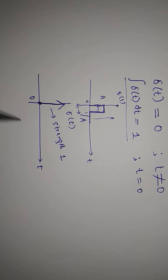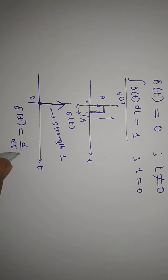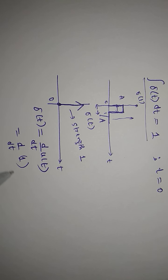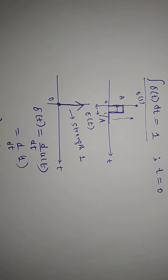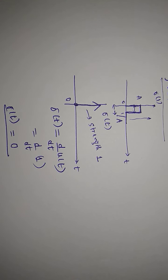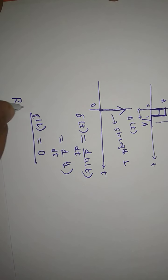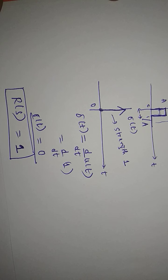One more important point: δ(t) can be defined as d/dt of u(t). Taking the derivative of u(t), which equals one, with respect to time gives zero, confirming δ(t) = 0 for t ≠ 0. The Laplace transform of δ(t), that is R(s), is equal to one. This is the Laplace transform of the impulse signal.